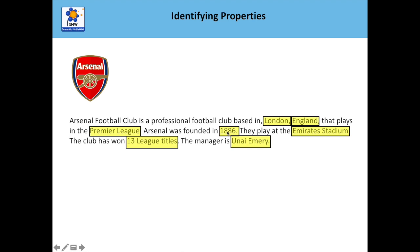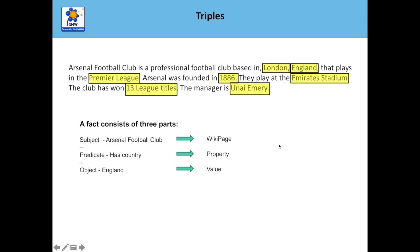We could also query which clubs were founded before the 1900s. We've identified the properties we think we can associate with this. Semantic MediaWiki works based on the semantic web, which works on triples. We have a subject — Arsenal Football Club, represented by the page it's on — a predicate, which is the property (e.g., 'country'), and the object, which is the value — England. The subject is already established because it's the Arsenal Football Club page, and we've stated the value.